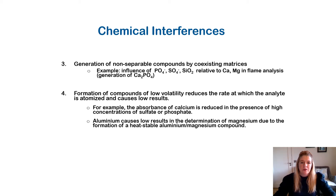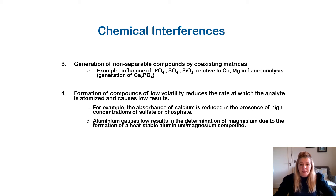You can get chemical interferences where the metal you're analyzing, such as calcium, can form calcium phosphate during the analysis. Formation of compounds of low volatility reduces the rate in the presence of high concentrations of sulfate or phosphate. Aluminium causes low results in the determination of magnesium due to the formation of a heat-stable aluminium-magnesium compound, as discussed in the previous AAS lecture.